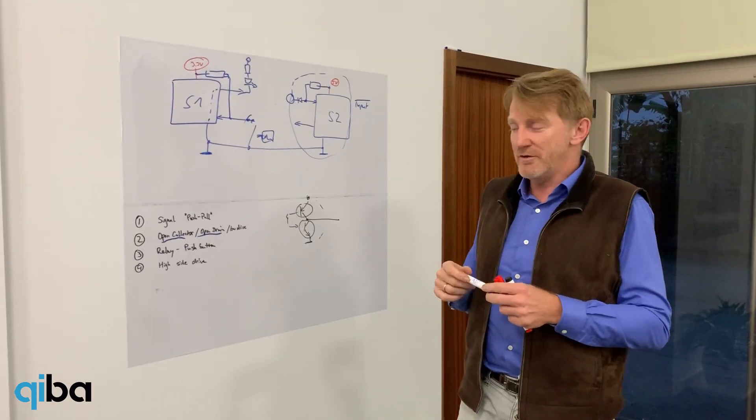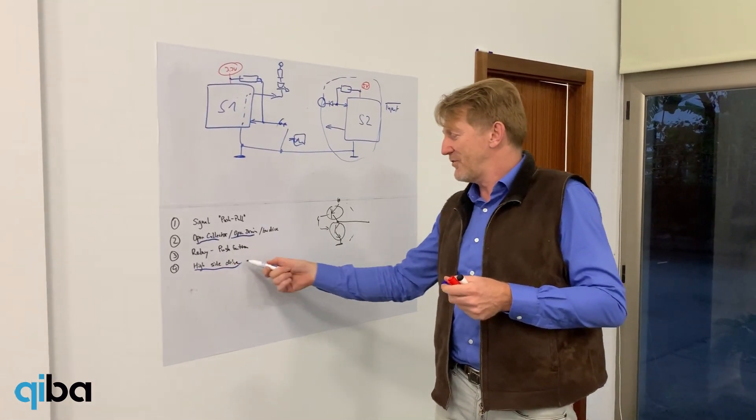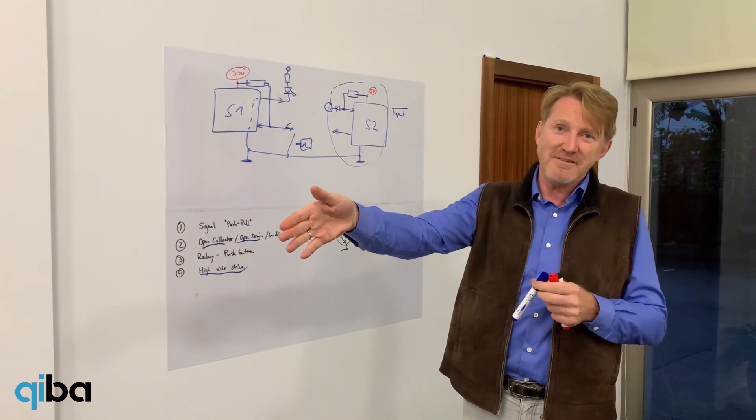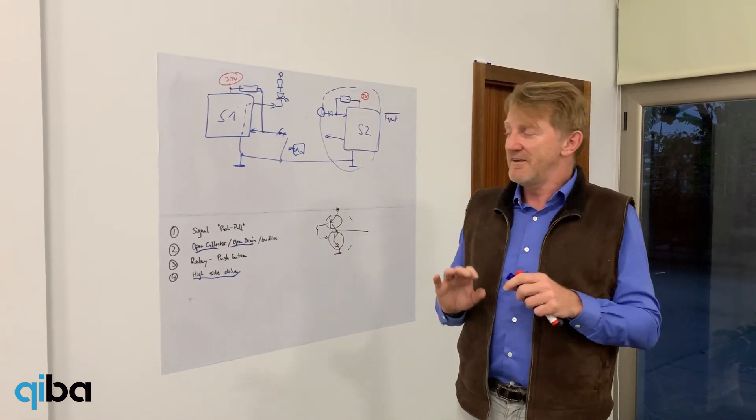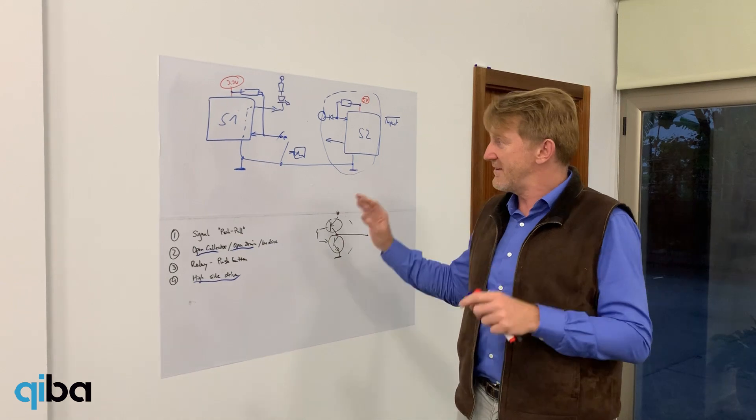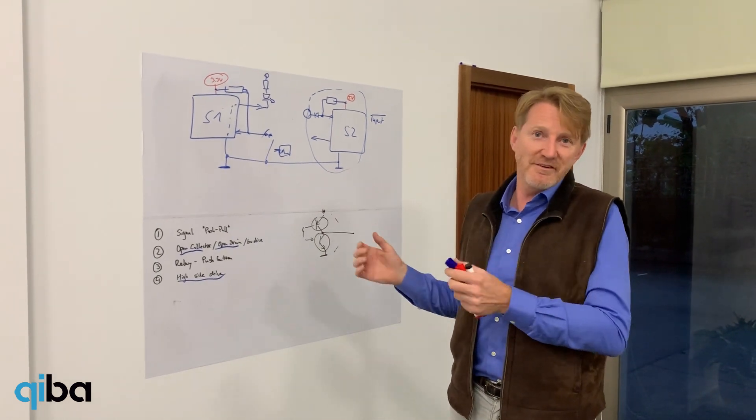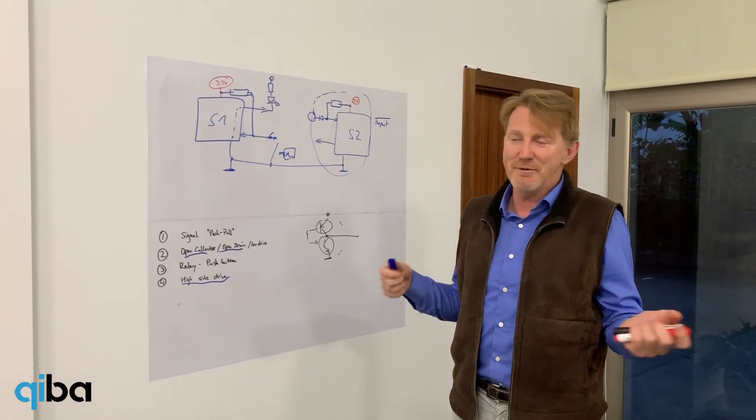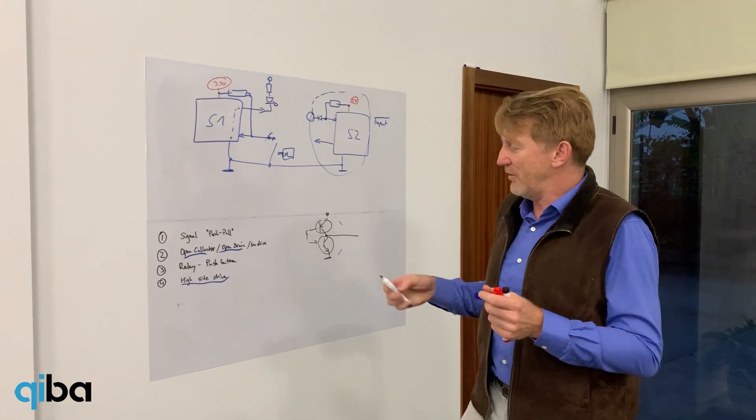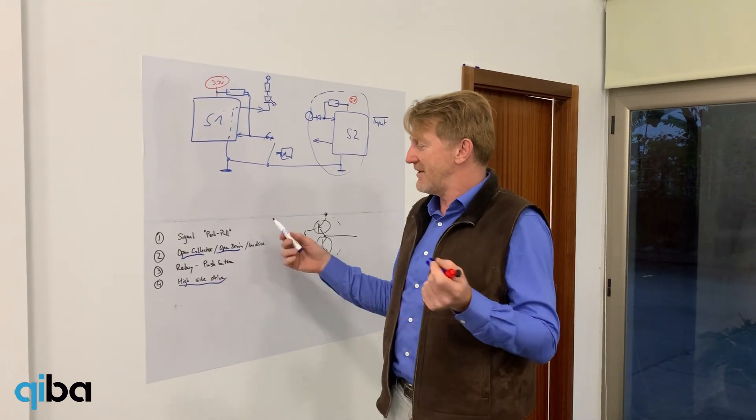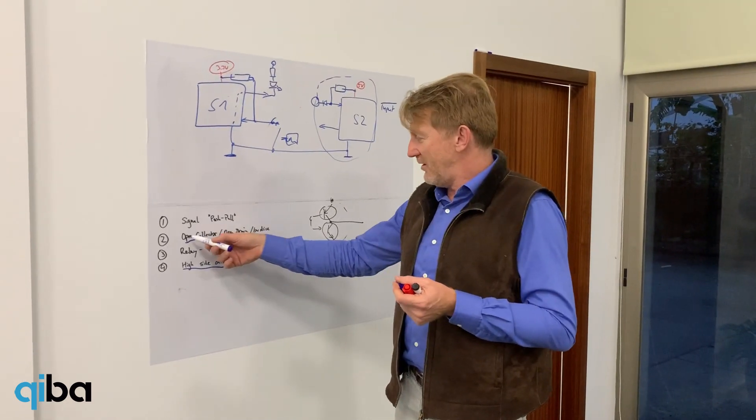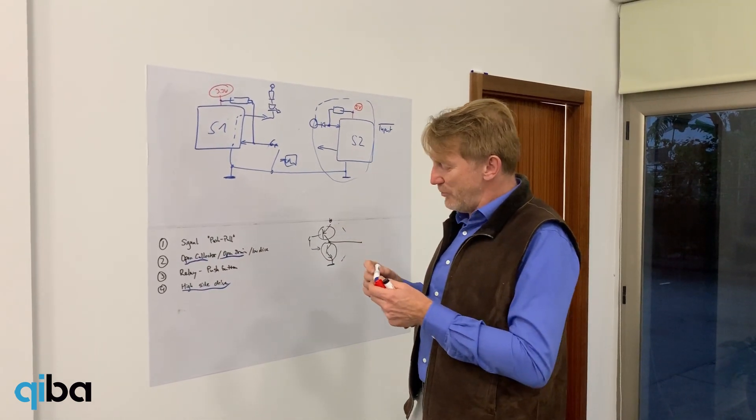In the industrial world, a lot of people do the high side drive. That means they deliver 24V to activate something or nothing. This is in the industrial world. This is not used in small signal stuff like access control or payment or whatever. Here, we really talk about interfaces which work like relays and contacts. We talk about this open collector, open drain, and that's what our devices do.